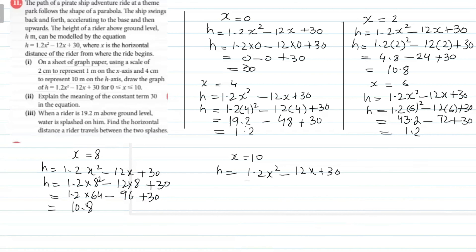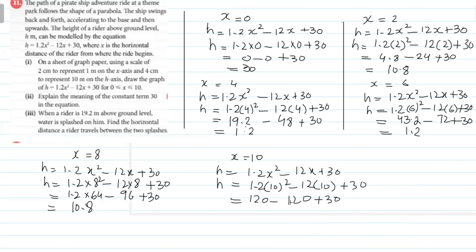اب x = 10 کے لیے: 1.2(10²) − 12(10) + 30 = 1.2(100) − 120 + 30 = 120 − 120 + 30 = 30۔ تو یہ answer آگیا ہے 30۔